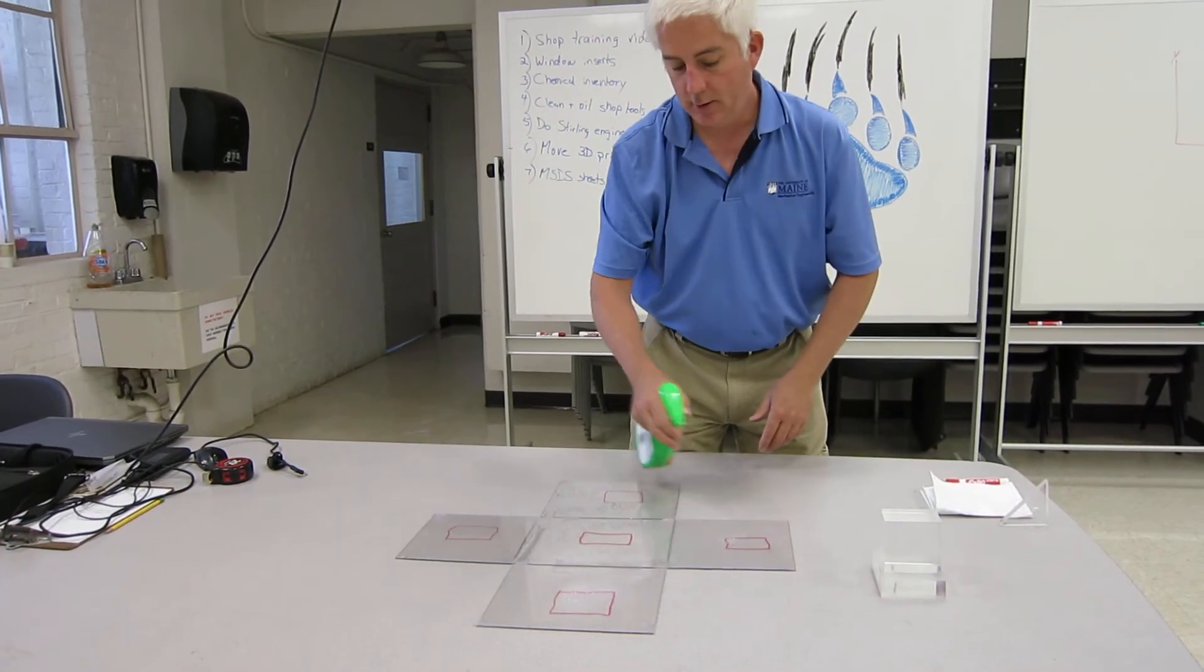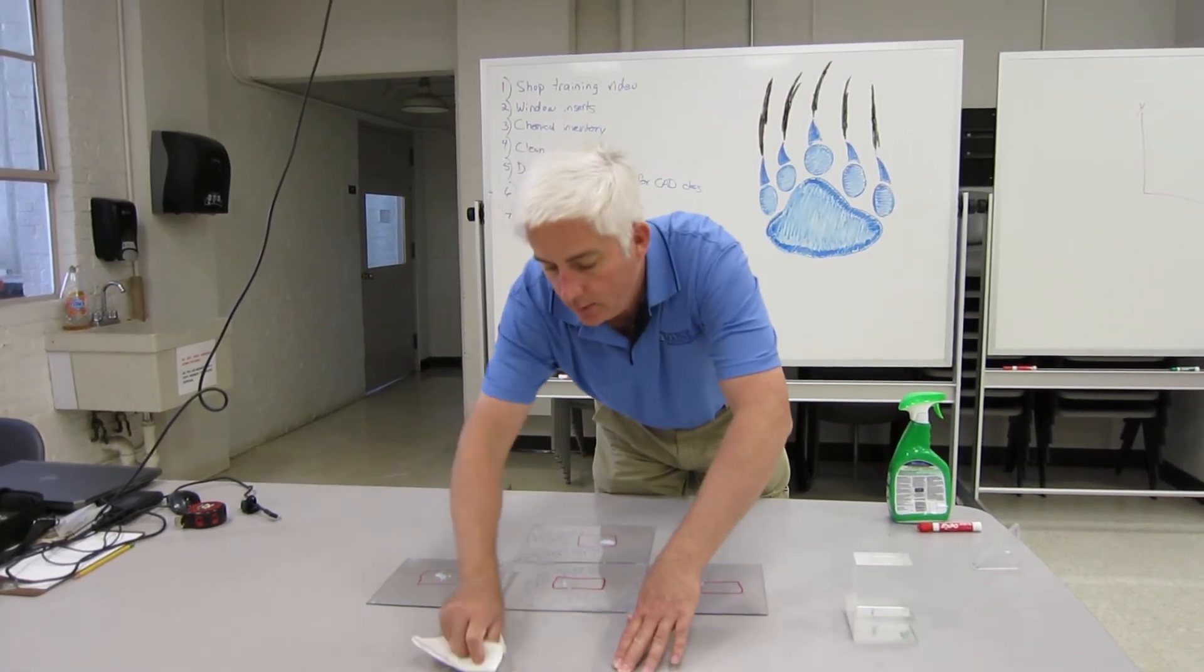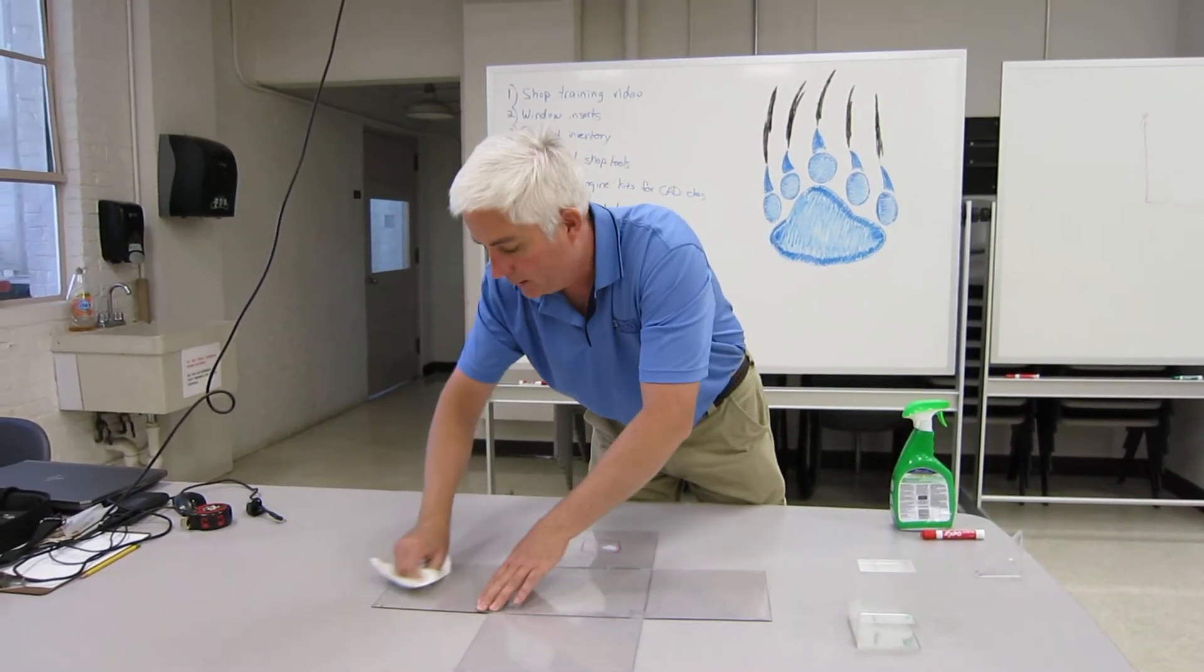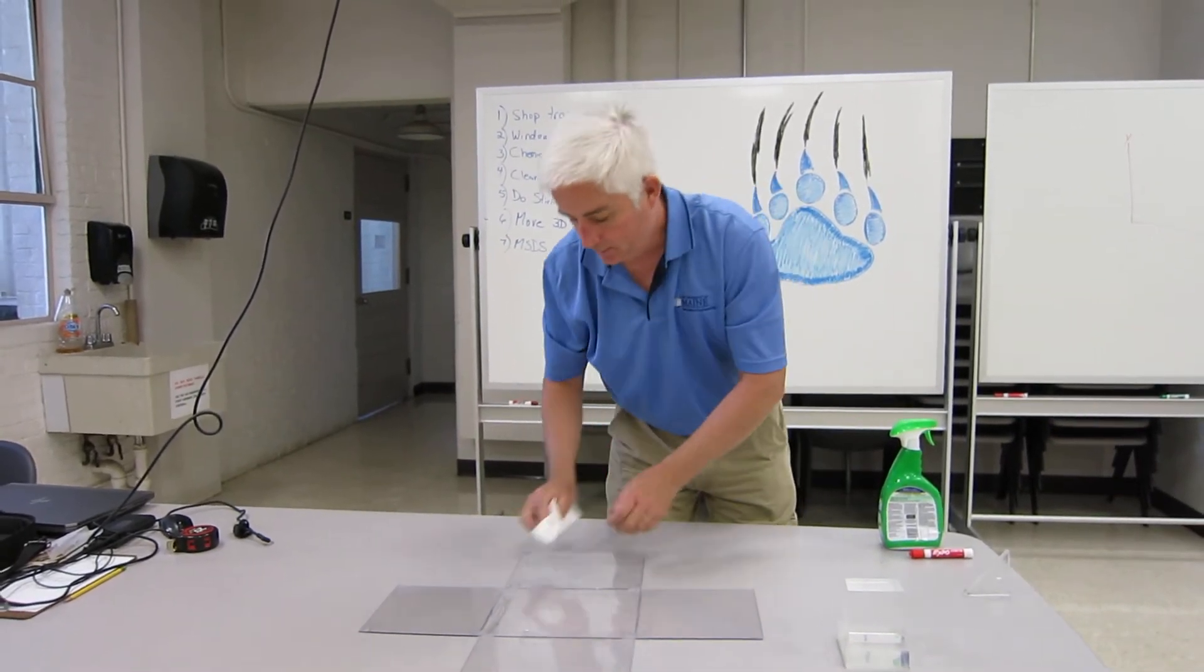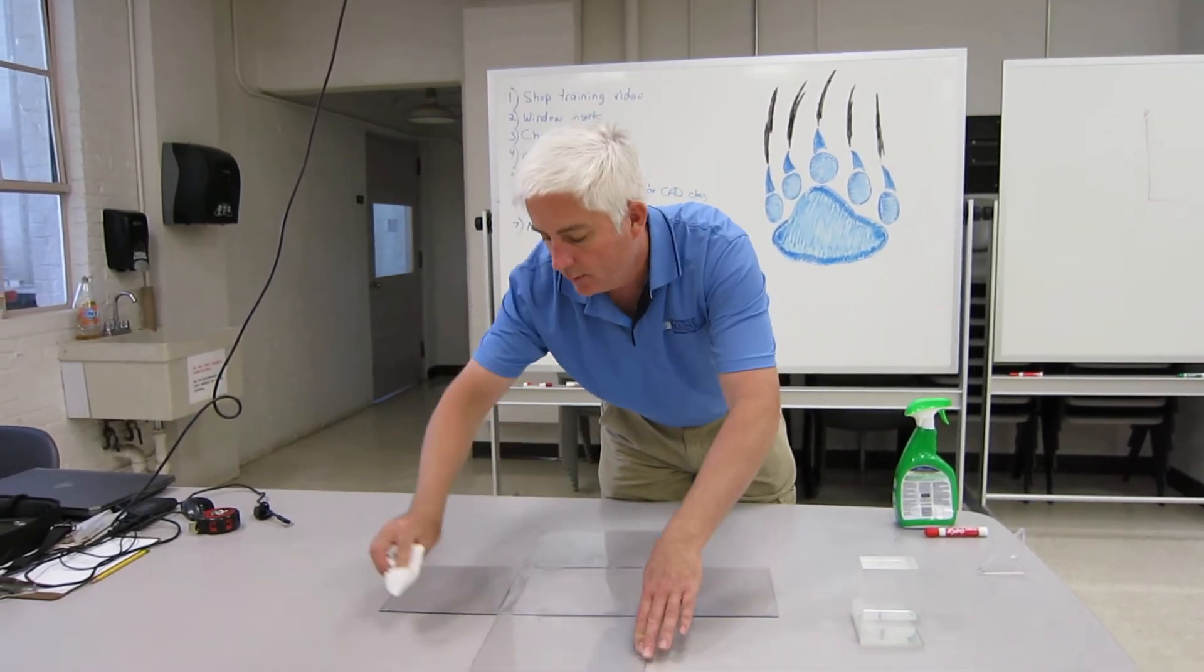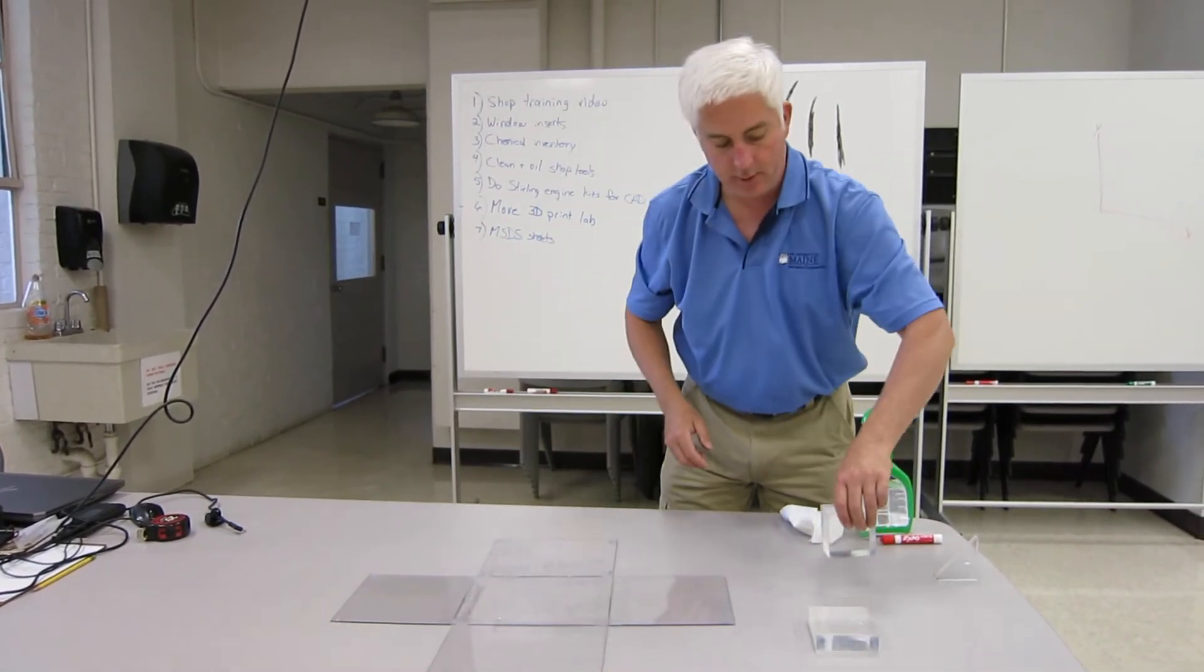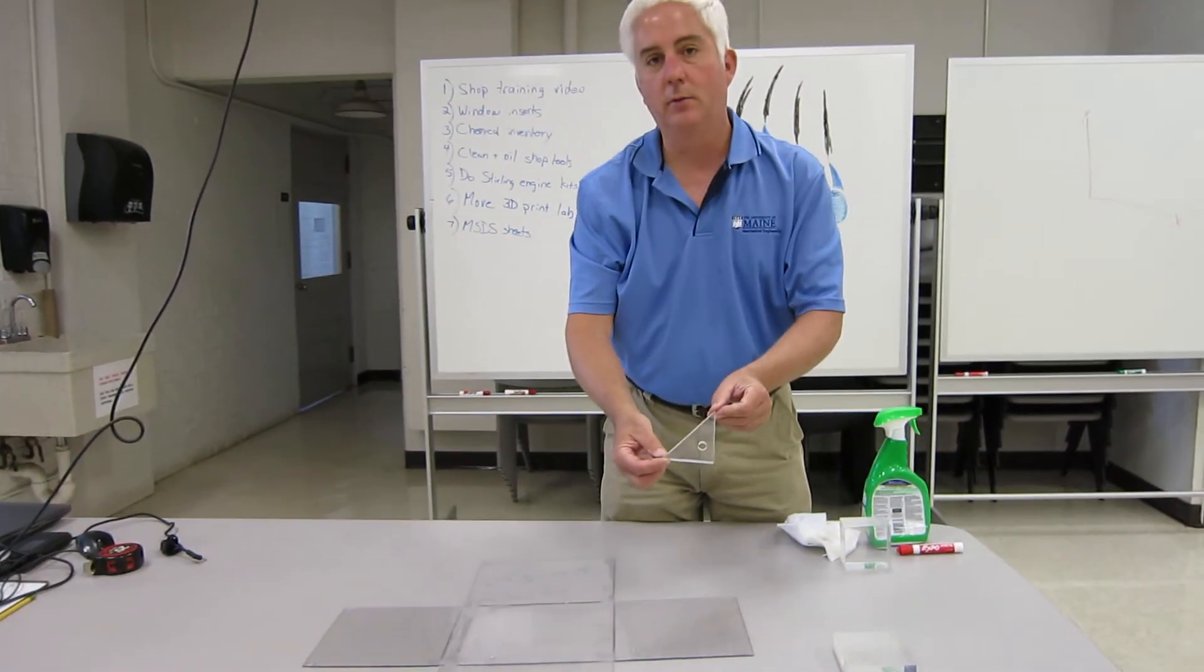So I'm going to clean off these images. And let's do something that has an internal feature. Something a little more complicated than just the rectangular block. Okay, our glass box is nice and clean.